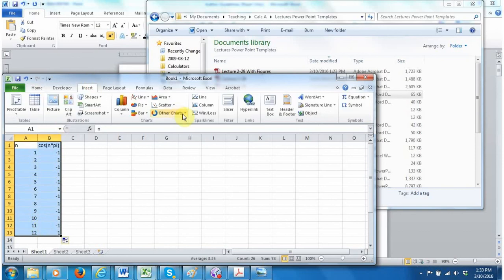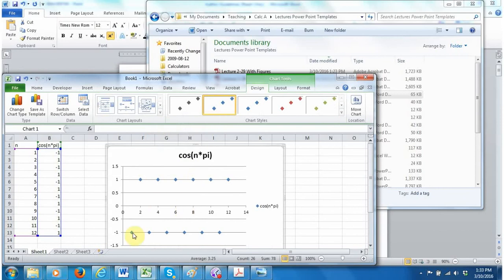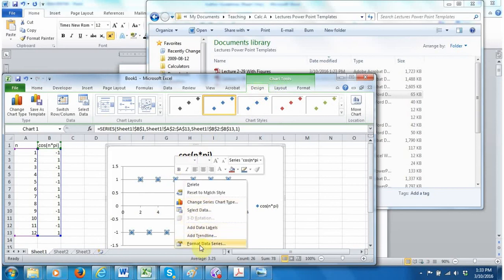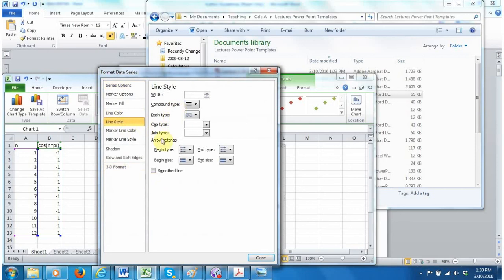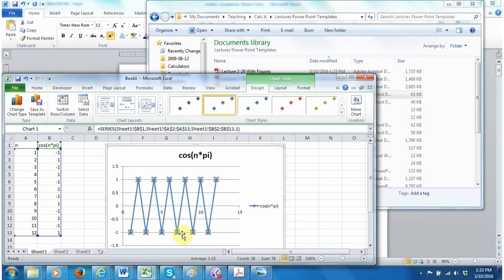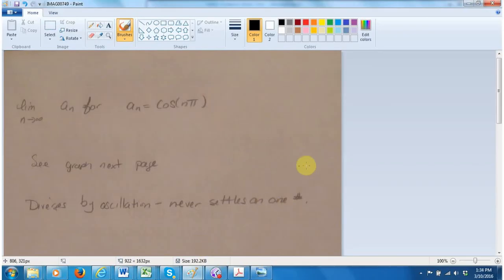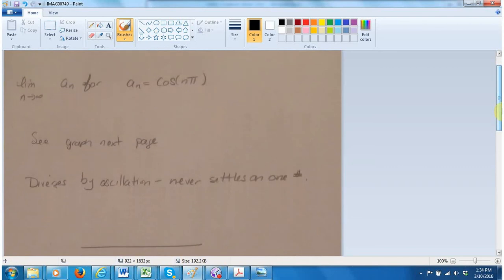If we graph that, you'll get this kind of - you can't quite see it, but it's definitely not settling down on one number. If I did a plot join, format data series, put solid line, what you'll see is it's not settling down, it's not plateauing, so it's definitely diverging. And what we would say is that it diverges by oscillation. It never settles on one number, but diverges by oscillation. In all cases, when you have a sequence, you want it to converge, you would want it to settle down graphically, you should see it plateauing or stabilizing at one value. In the case of cosine(n*pi), it is not doing that, it is oscillating.